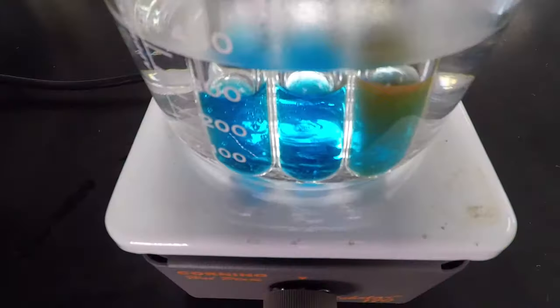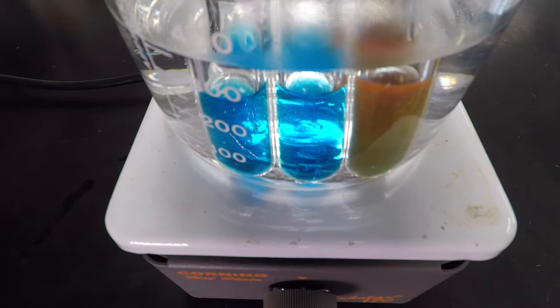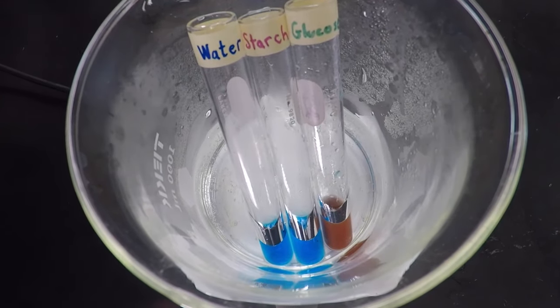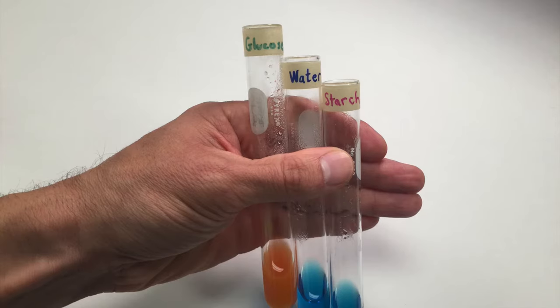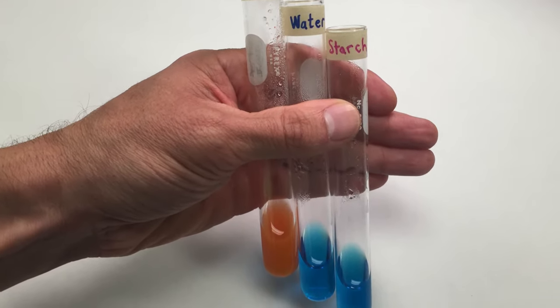I've got my water, starch, and glucose and you'll see that the glucose on the right turns brick orange and that is a positive test for sugar. The other two do not change.